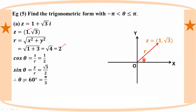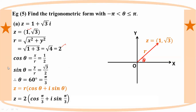So the trigonometric form is z equals r into cos plus i sine theta. That gives us z equals 2 cos(pi/3) plus i sine(pi/3). This is the trigonometric form of the complex number.